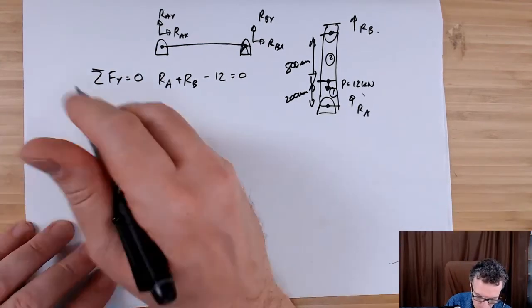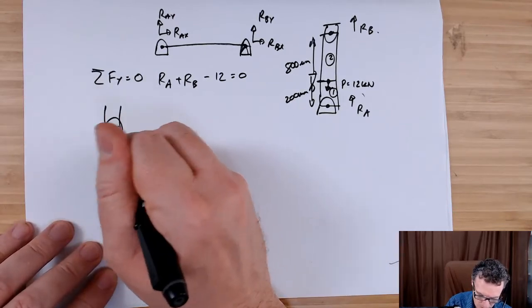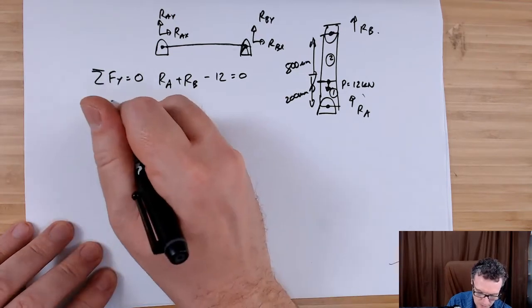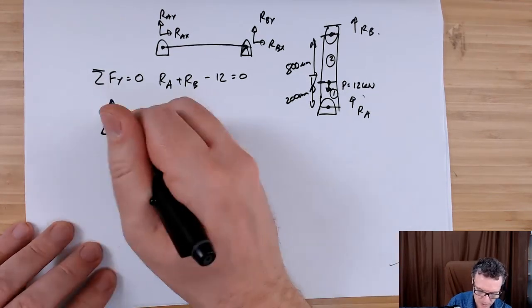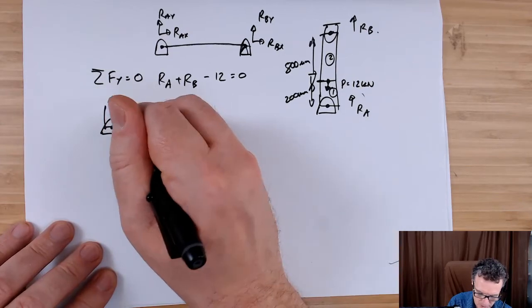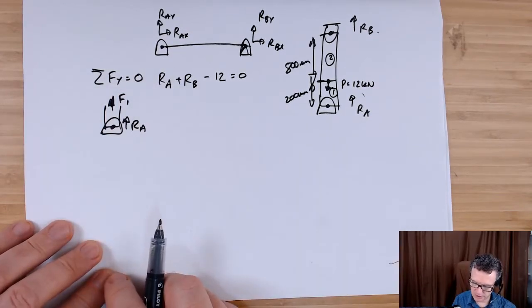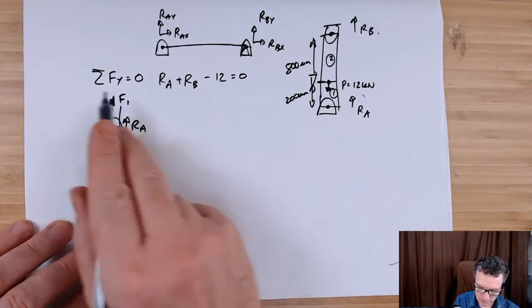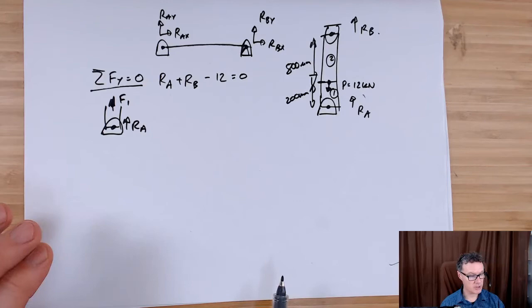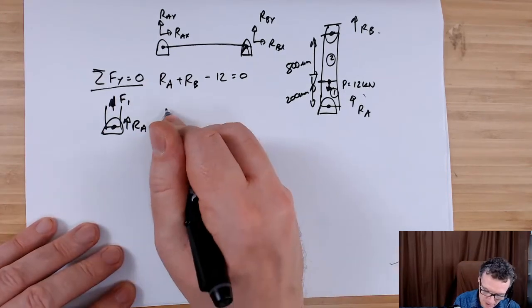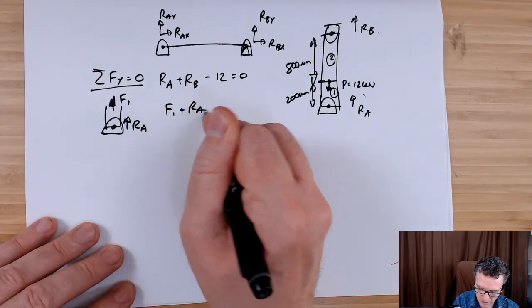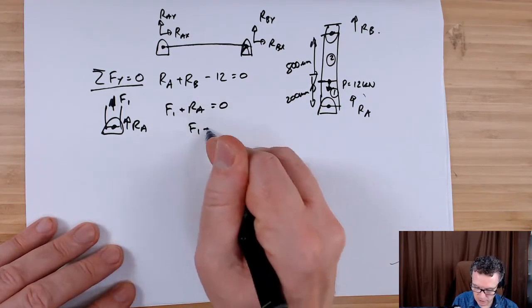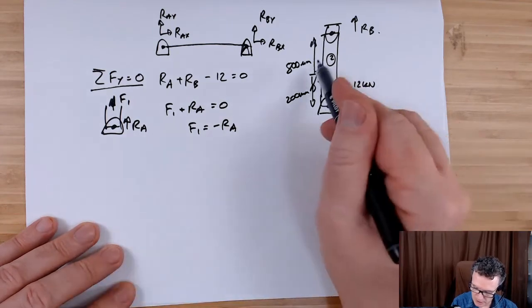Now let's make a free body, do an imaginary cut through the body at one to expose the internal force. We cut through the body, we'll have Ra. Our internal force needs to be pointing away and through the cut, so that's our F1. So again, I'm going to apply the rule, sum up my forces in the y direction, and that'll give me F1 plus Ra equals zero, so F1 equals minus Ra.